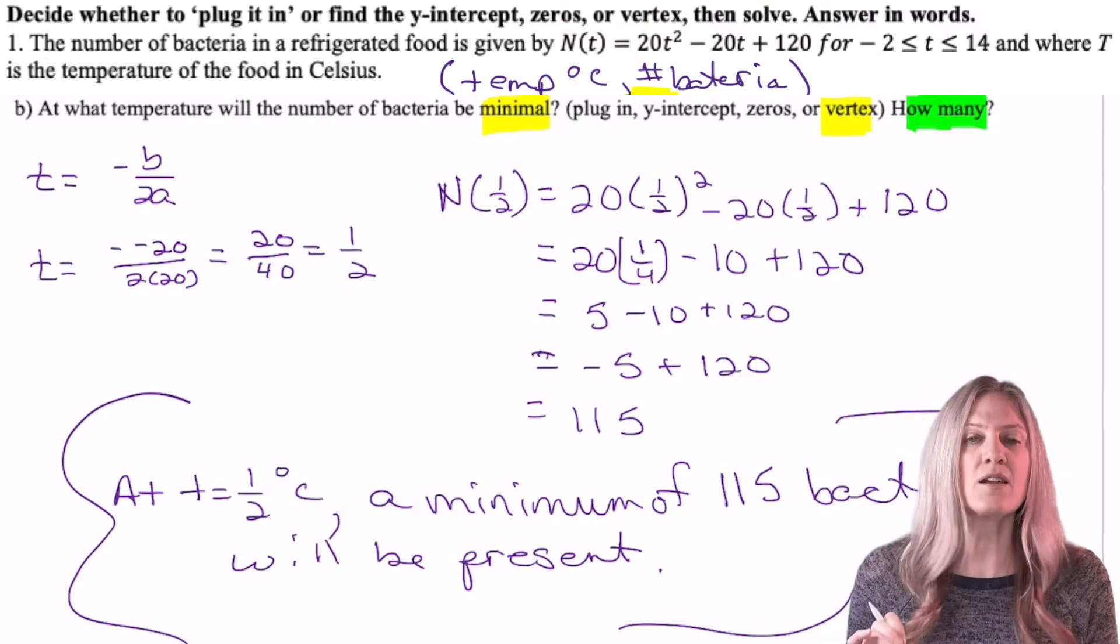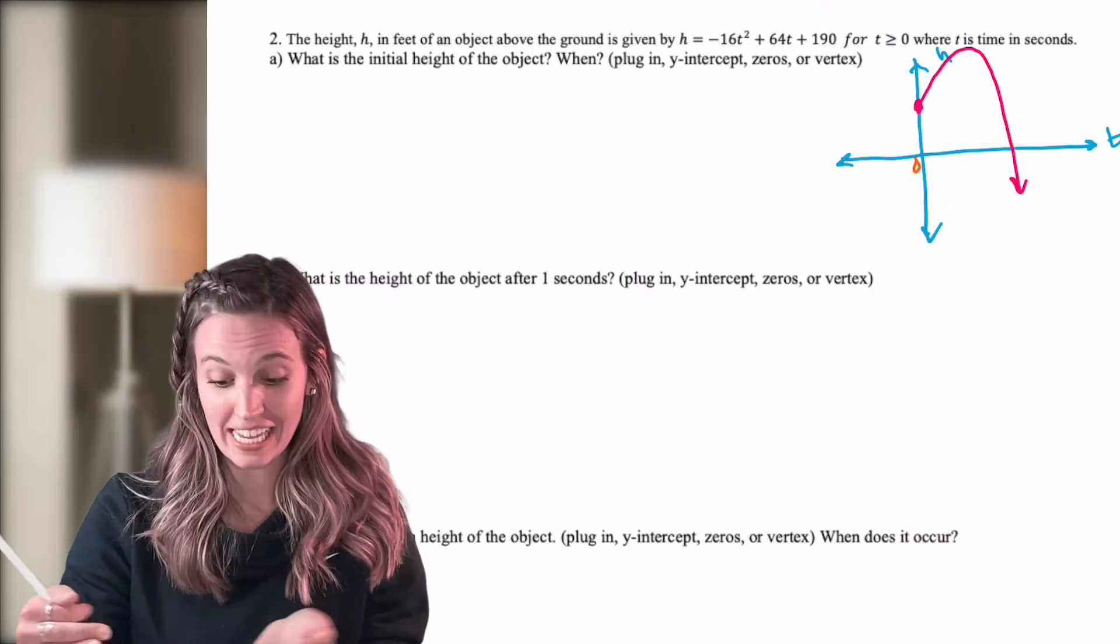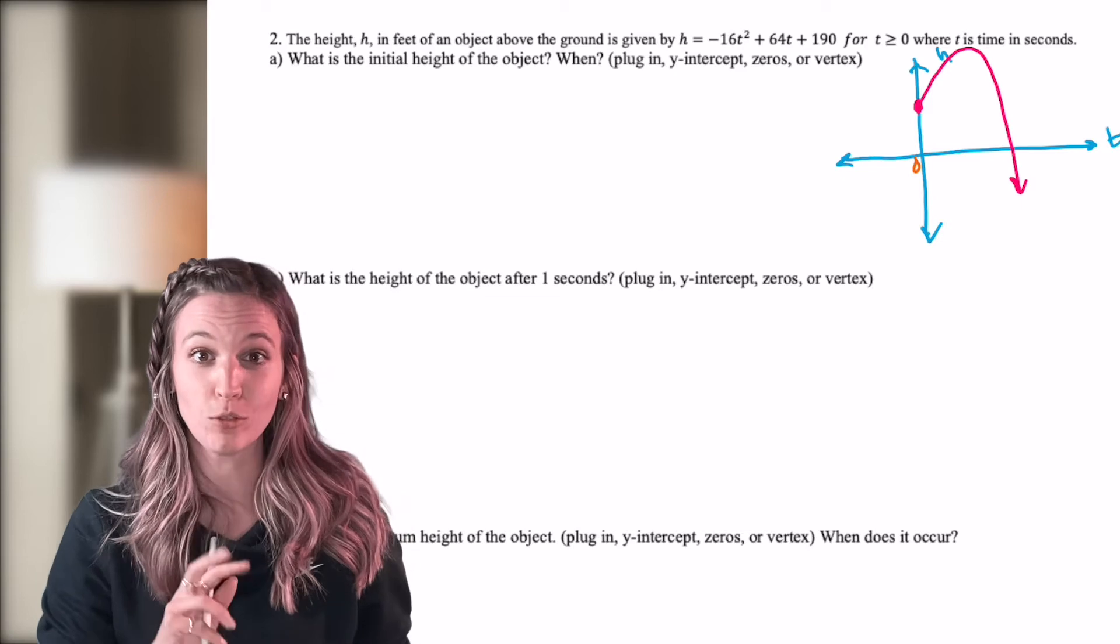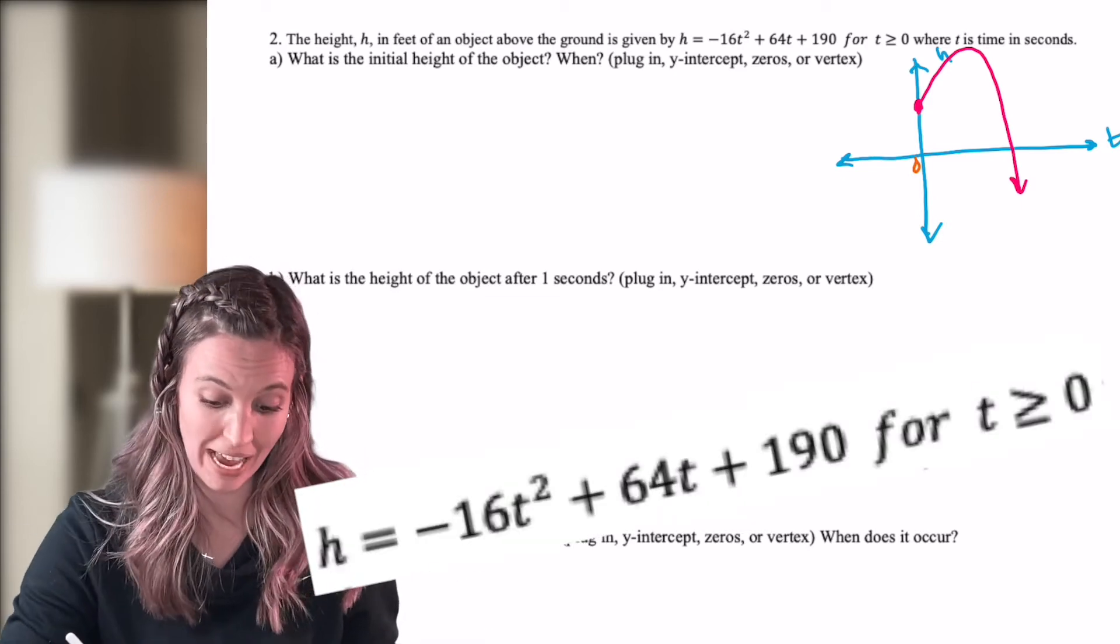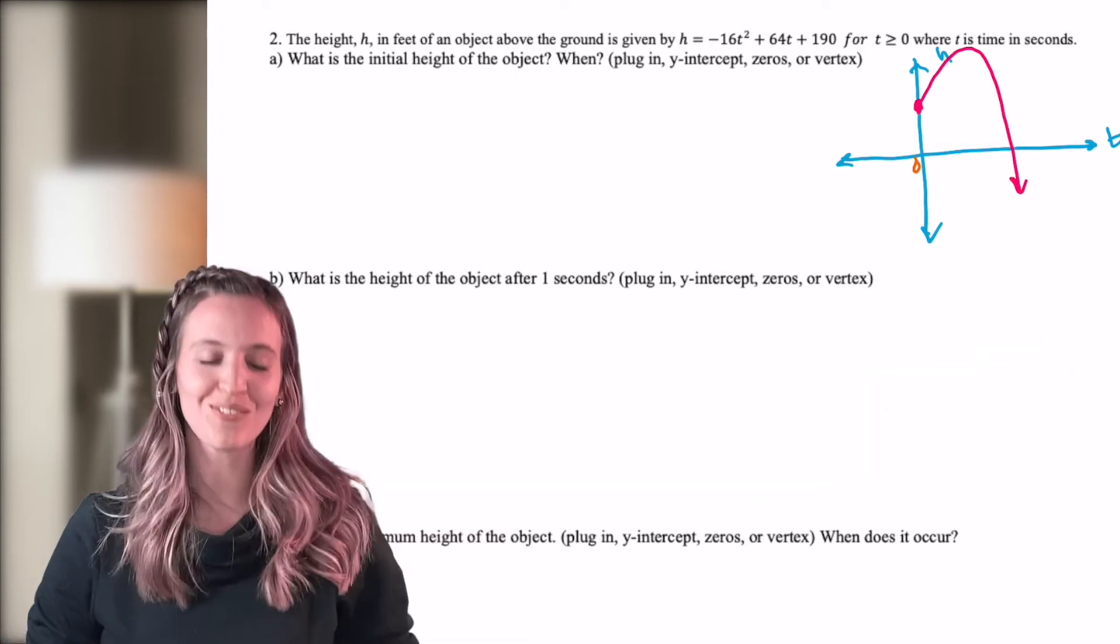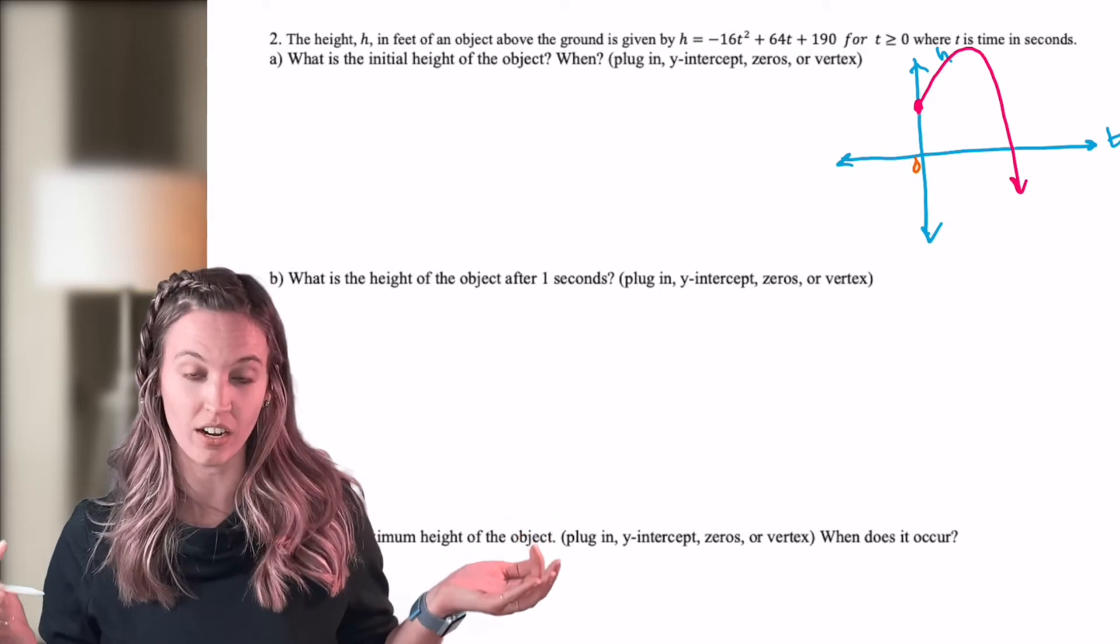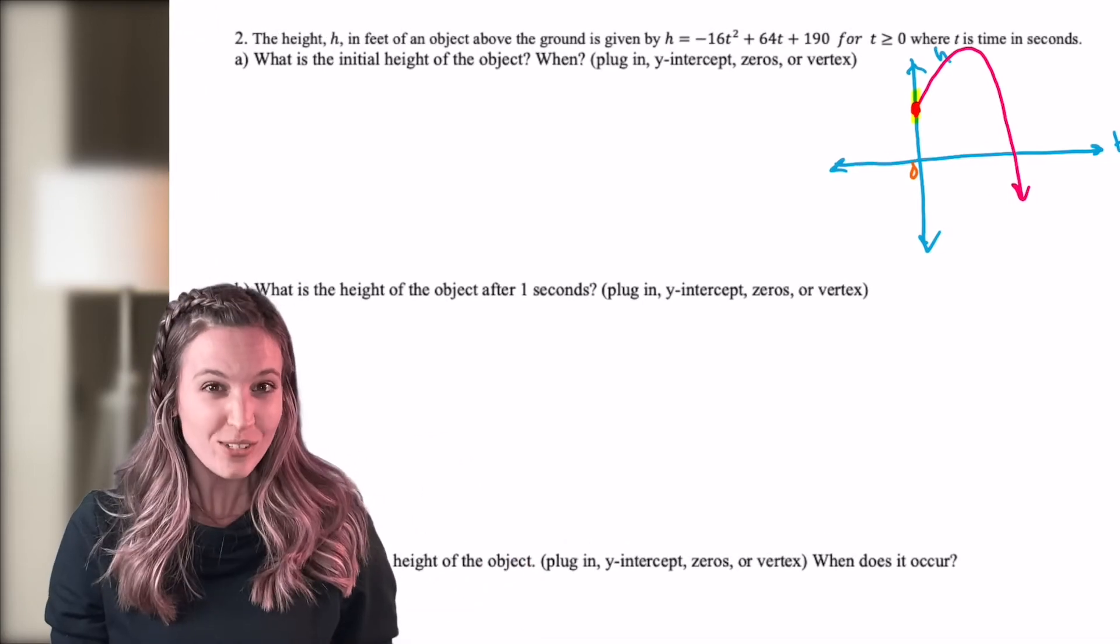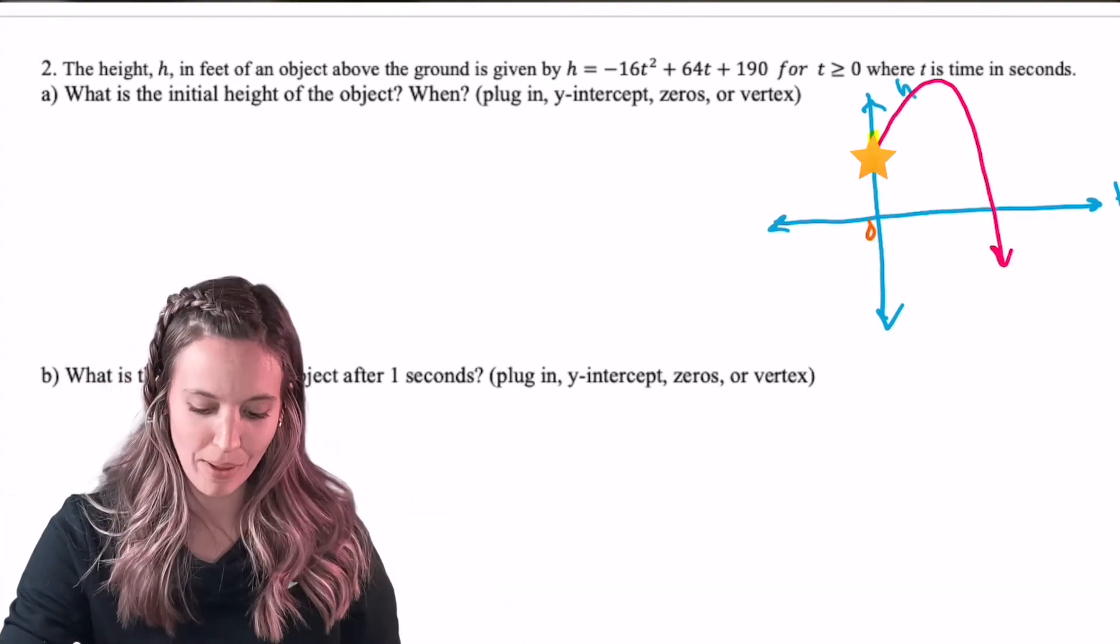The height in feet of an object is given by this quadratic in example two. t stands for time in seconds, so that's my input, and h stands for my height, so that's my output. So the first question asks, what is the initial height of the object, and when does it occur? Well, at zero seconds, the ball is right there on my graph. So where is that in my equation?